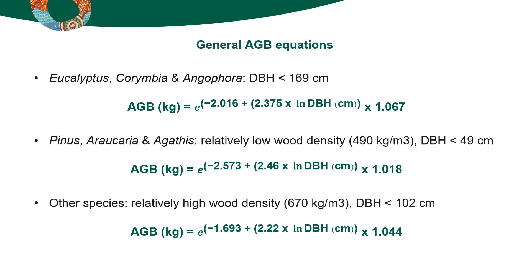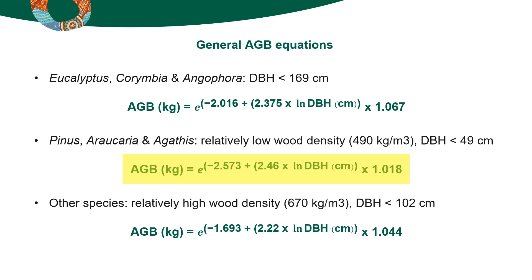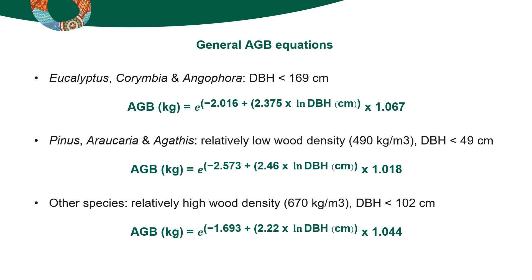They give an AGB value for hardwood trees from the Eucalyptus, Corymbia, and Angophora genera; conifers from the Pinus, Araucaria, and Agathis genera that typically have relatively low stem wood density; and other tree species that typically have relatively high wood density. They are valid for plantations and natural forests throughout Australia for the DBH values displayed. It is important to note that they are less accurate for individual trees, but when predictions are made across a wide range of data, such as a whole forest, individual errors are largely cancelled out.